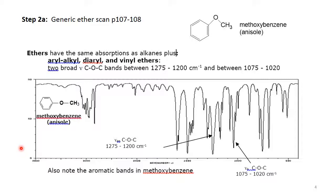For a generic scan of an ether, methoxybenzene is used as the generic scan, so this will be exactly what you should see. Ethers have the same absorptions as alkanes, meaning methyl groups that look like an alkane methyl group. In addition, aryl alkyl ethers — as well as diaryl or vinyl ethers — have two broad C-O-C stretches: one in the region of 1200 to 1275 wavenumbers, and another between 1020 and 1075. These are in a congested region among many other C-C absorptions, but they are broader than usual C-C stretches, which assists with identification.